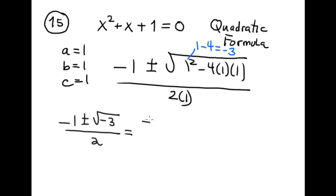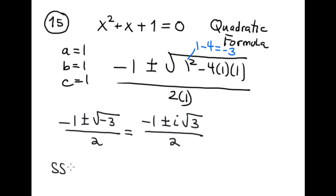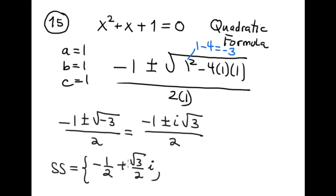Again, √(−3) = i√3, so this becomes (−1 ± i√3) / 2. Splitting into real and imaginary parts, the solution set is { −1/2 + (√3/2)i, −1/2 − (√3/2)i }. Final answer.